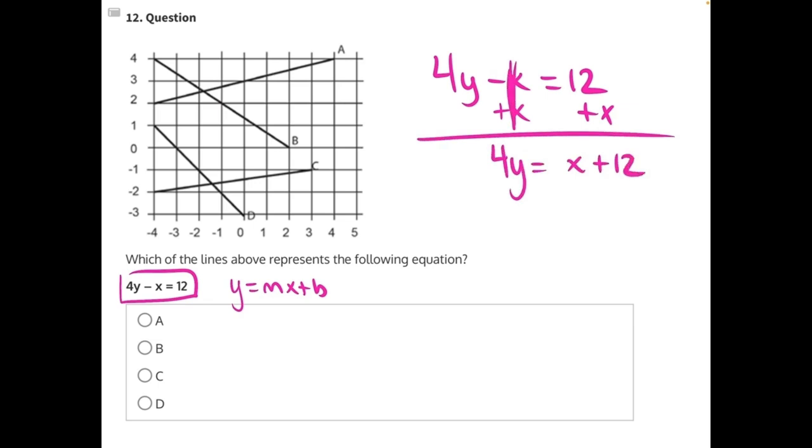Then 4 is being multiplied to y, so we can divide everything by 4 to get y by itself equaling 1 fourth x plus 12 divided by 4 will give us 3.